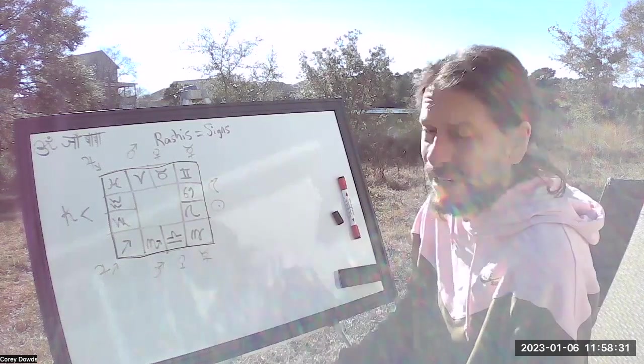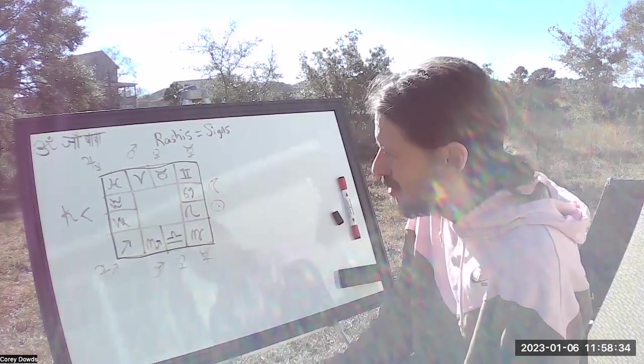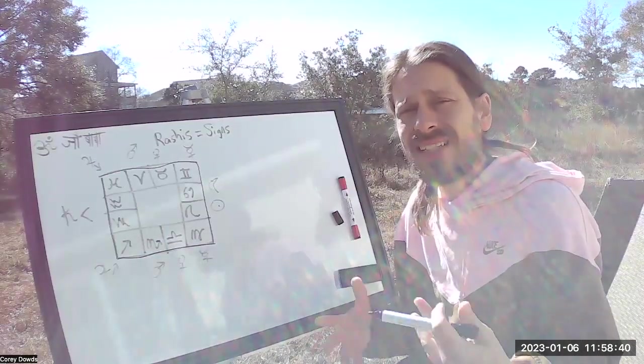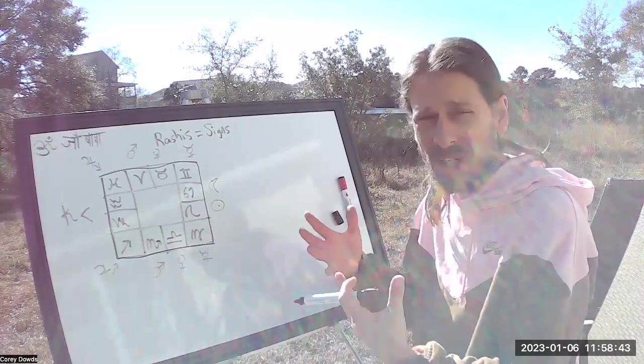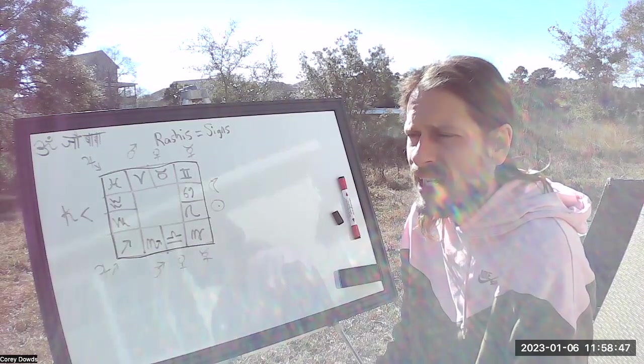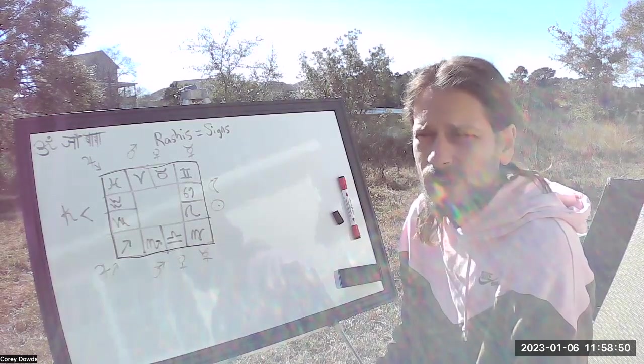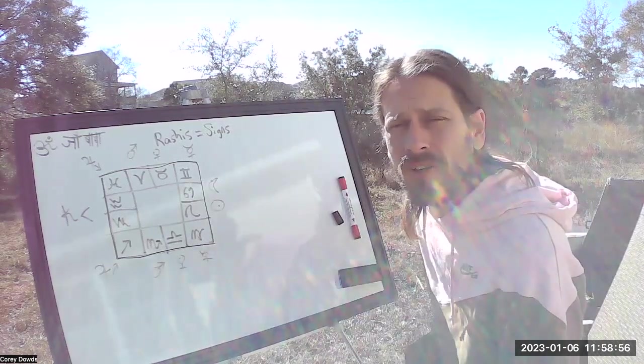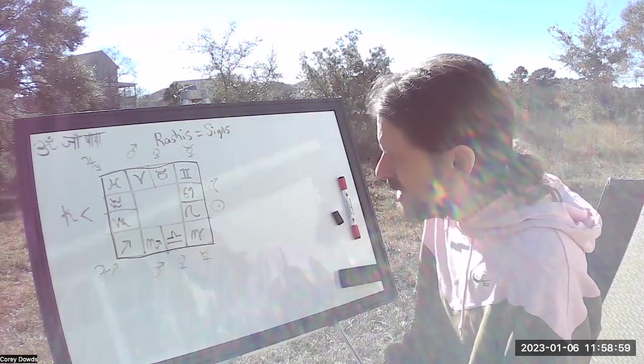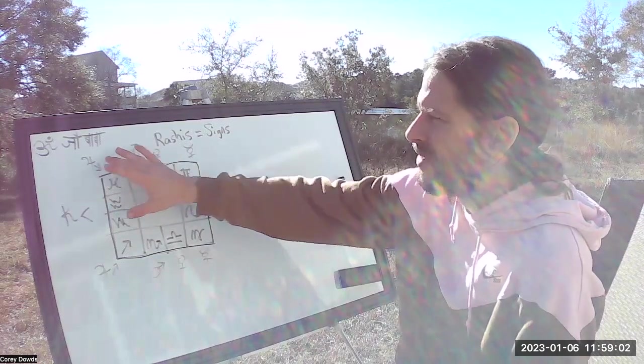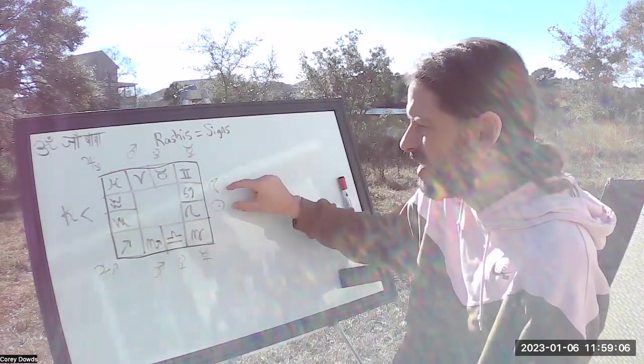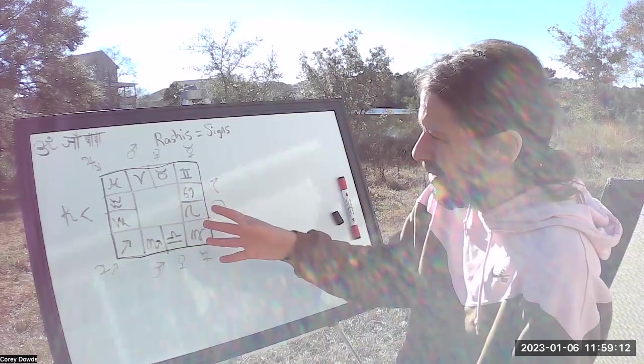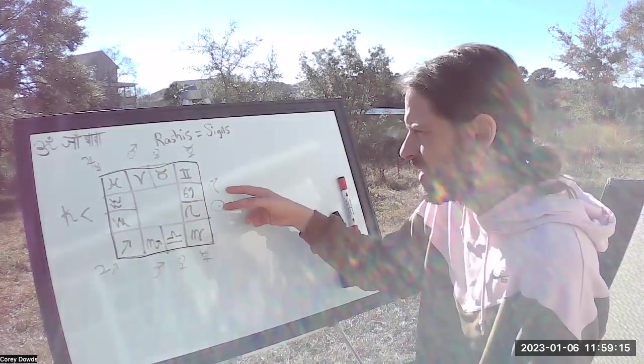What signs are ruled by what planets? Starting off, basically every sign has a lord, a planet, and this planet acts like a person. It acts like a landlord. So each planet or graha rules two signs, except the sun and the moon. They only rule one sign each. Each planet is a lord of two signs, except the sun and the moon.